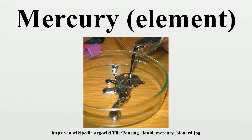Amalgams: Mercury dissolves many other metals such as gold and silver to form amalgams. Iron is an exception, and iron flasks have traditionally been used to trade mercury. Several other first-row transition metals with the exception of manganese, copper and zinc are reluctant to form amalgams. Other elements that do not readily form amalgams with mercury include platinum. Sodium amalgam is a common reducing agent in organic synthesis and is also used in high-pressure sodium lamps. Mercury readily combines with aluminium to form a mercury-aluminium amalgam when the two pure metals come into contact. Since the amalgam destroys the aluminium oxide layer which protects metallic aluminium from oxidizing in depth, even small amounts of mercury can seriously corrode aluminium.